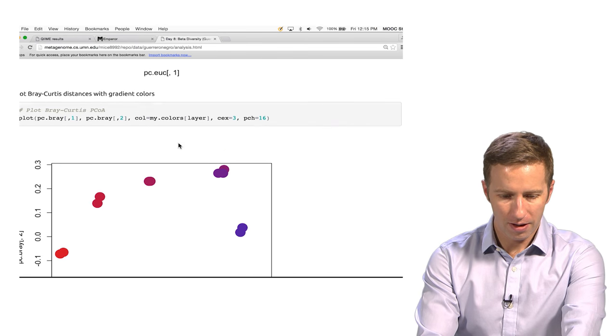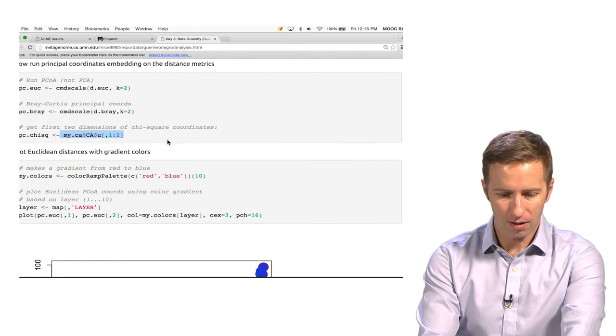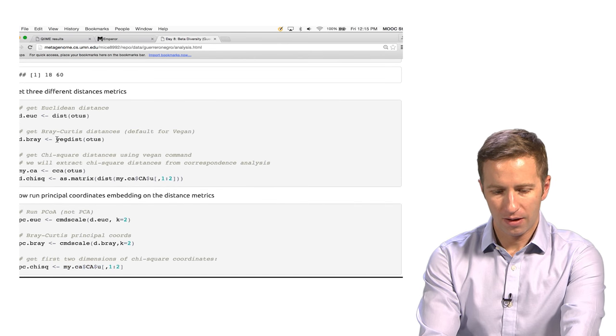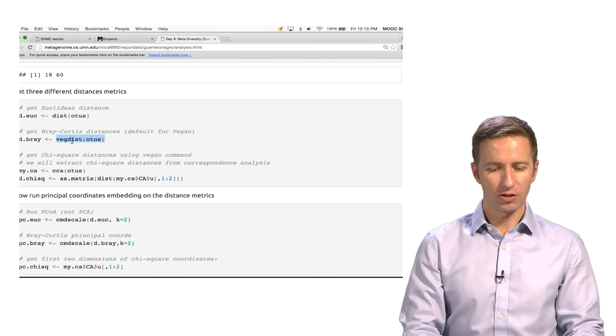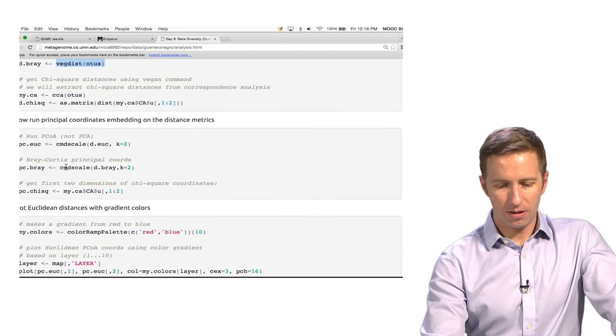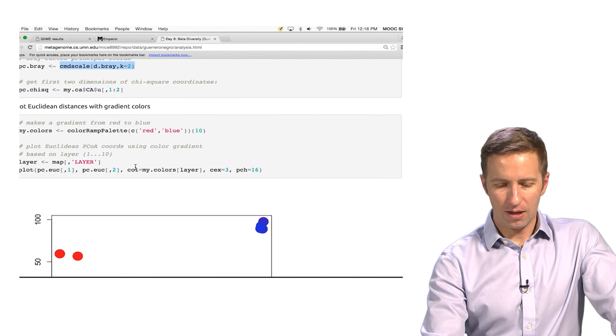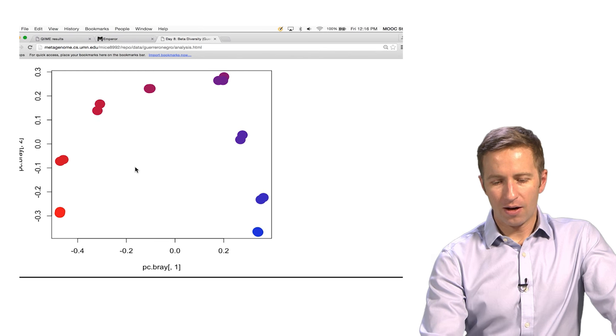Same thing. We calculate Bray-Curtis distances here. Again, we're using this vegan package to do Bray-Curtis. Then this is where we get the principal coordinates. And then we're going to make the plot right here. And here's what we get.